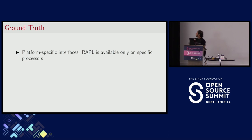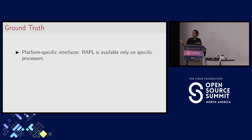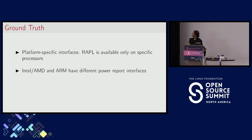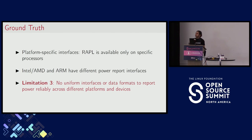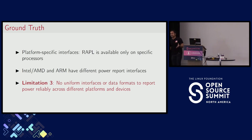Third, let's take another look at RAPL. RAPL is available only on specific classes of processors — specific families support it. Intel and AMD support RAPL, but ARM has a completely different interface, completely different metrics, and a completely different reporting mechanism. So the limitation is that we do not have a uniform interface or reliable data format to get energy data across different devices and platforms.